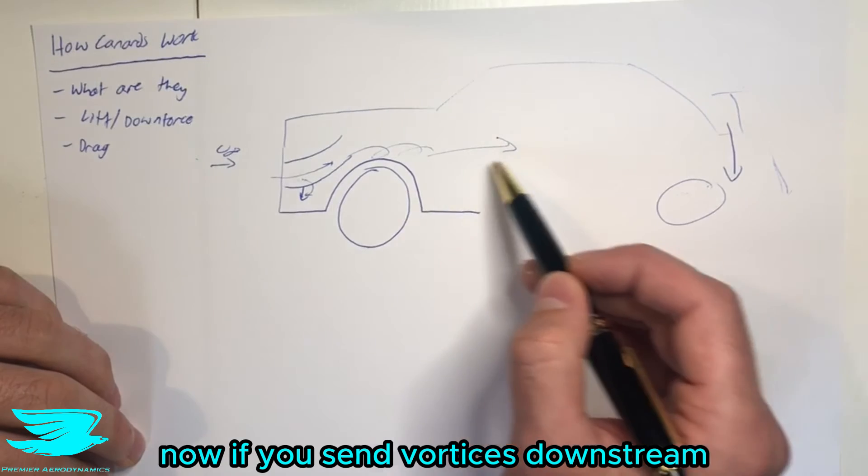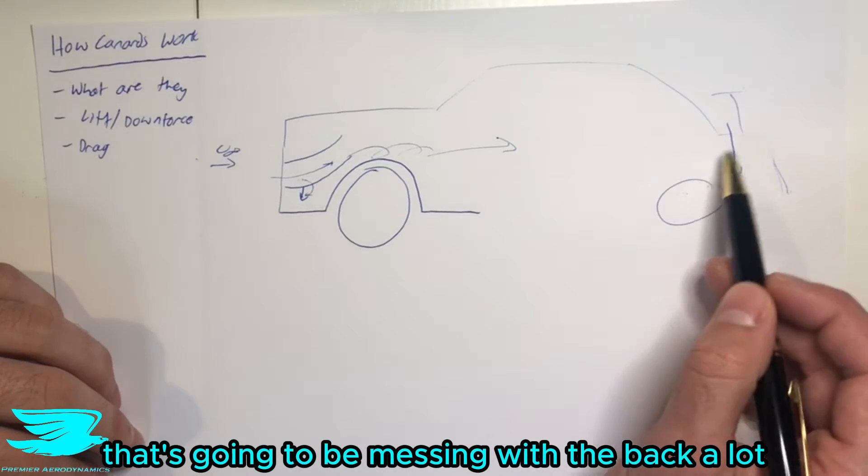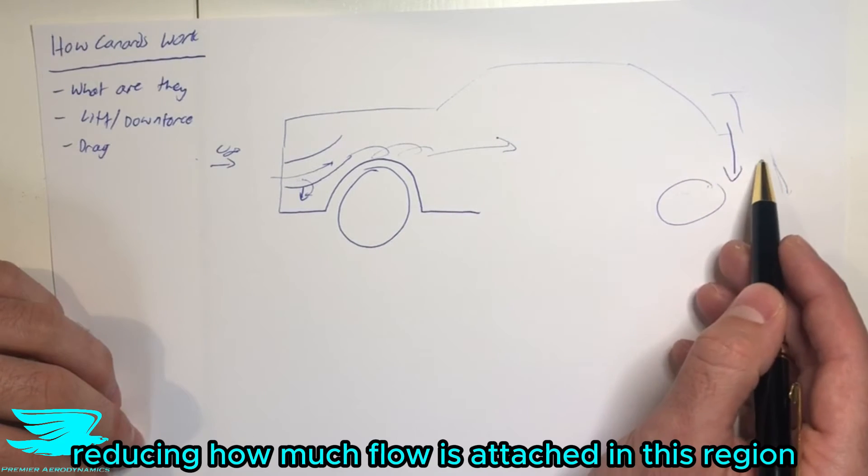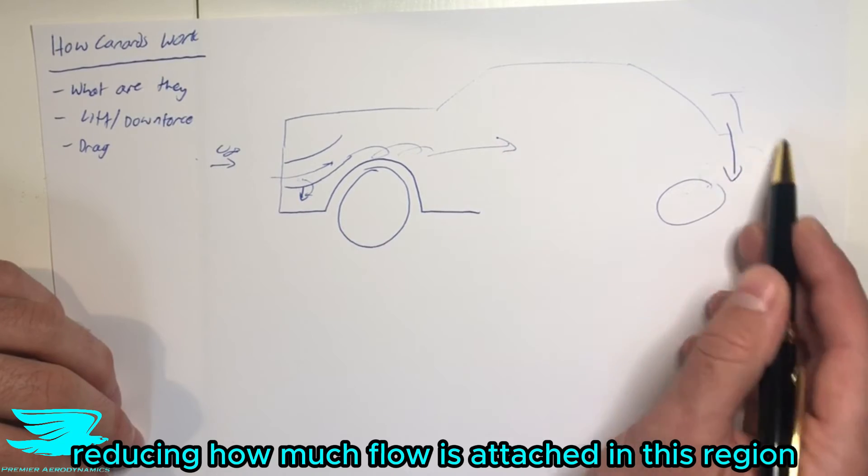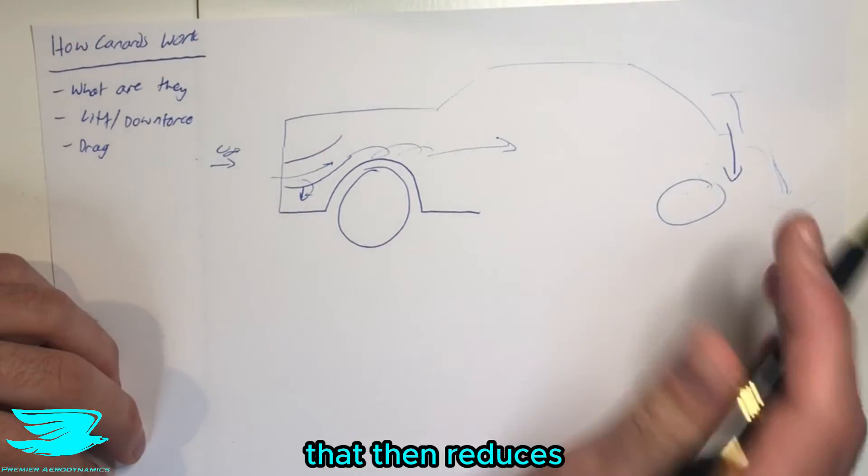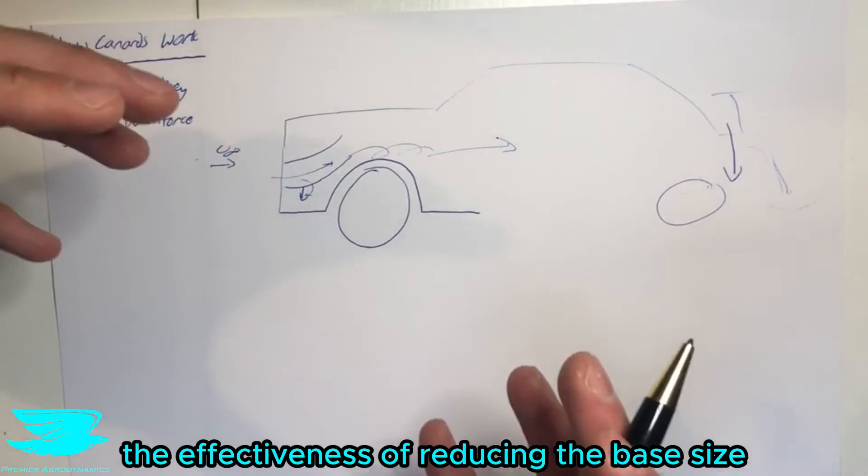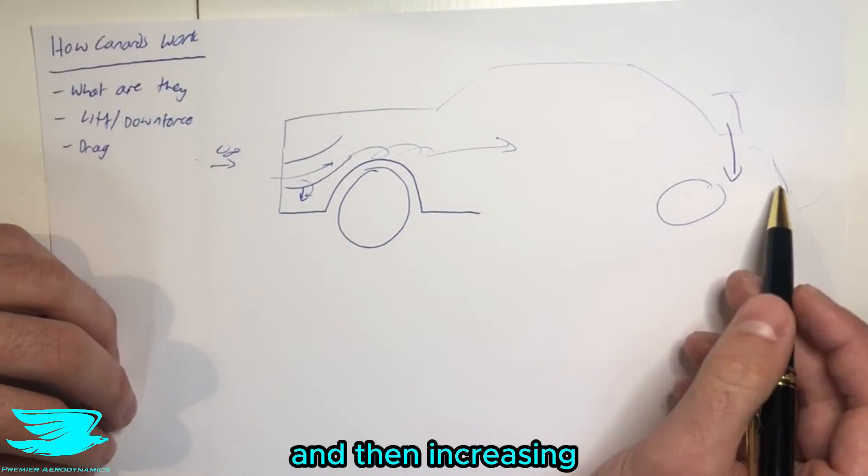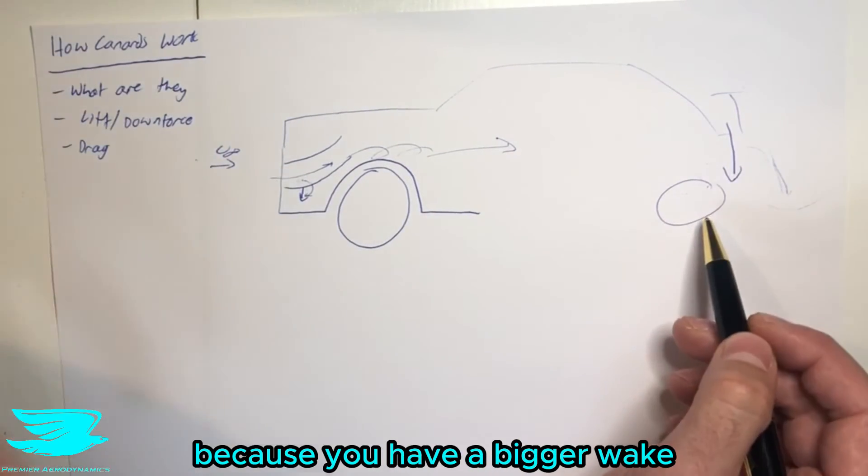Now, if you send vortices downstream, that's going to be messing with the back a lot, and potentially reducing how much the flow is attached in this region, and increasing the wake. That then reduces the effectiveness of reducing the base size at the back of the car, and increases the pressure drag because you have a bigger wake.